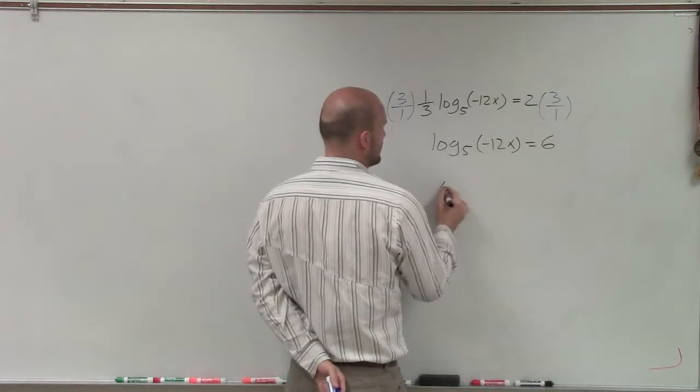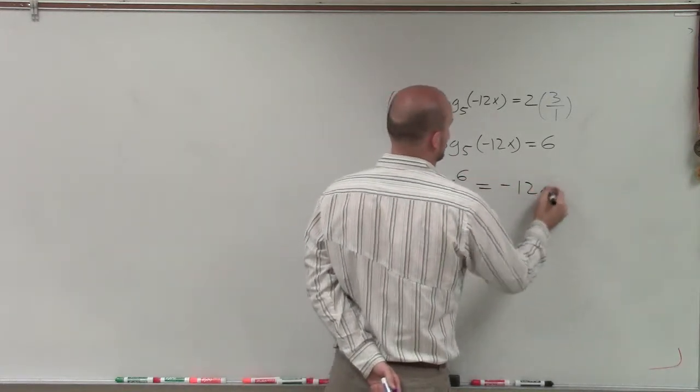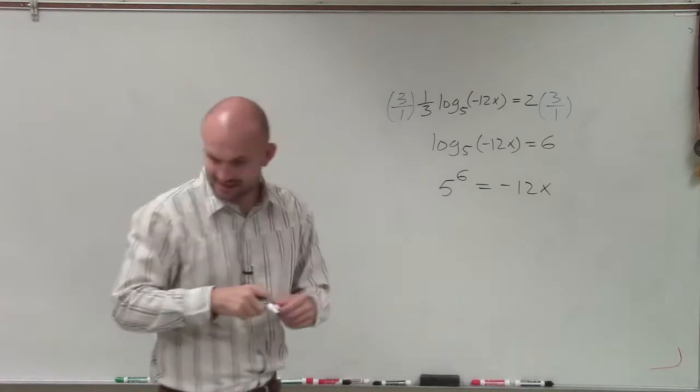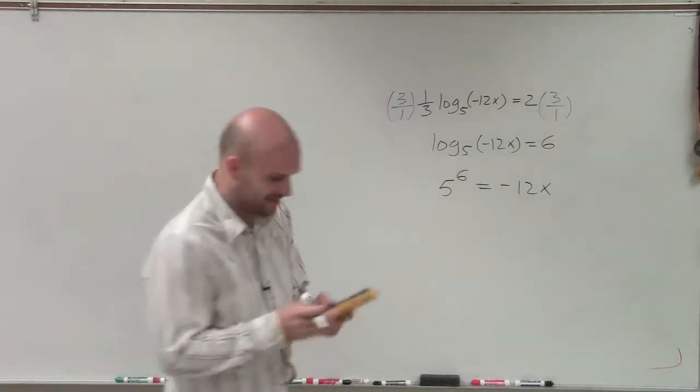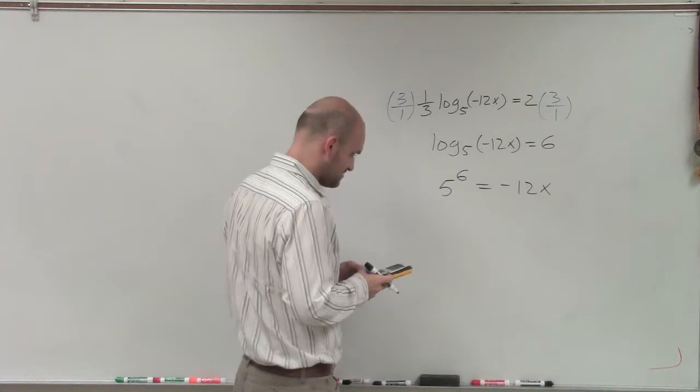So by converting this to exponential form, I'll have 5 to the 6th power equals negative 12x. Now, I don't know 5 to the 6th power off the top of my head, so I'm going to use my calculator and just do 5 raised to the 6th power.